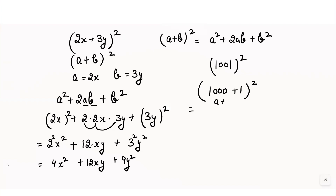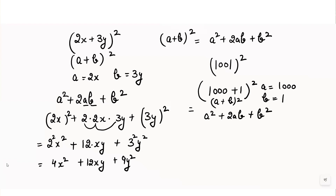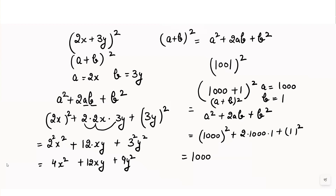Here we have (a + b) whole square where the value of a is 1000 and the value of b is 1. Using the formula a squared plus 2ab plus b squared: we get 1000 squared plus 2 into 1000 into 1 plus 1 squared. That gives us 1,000,000 plus 2000 plus 1.